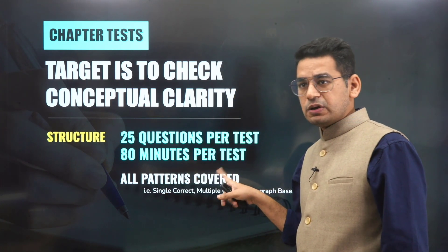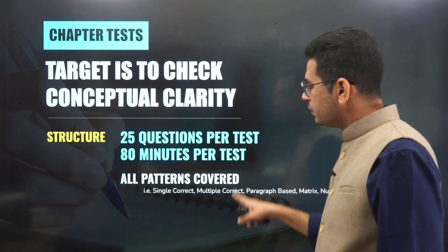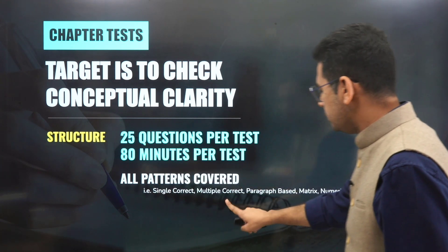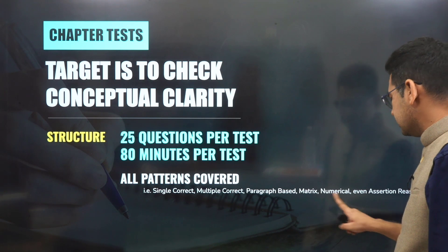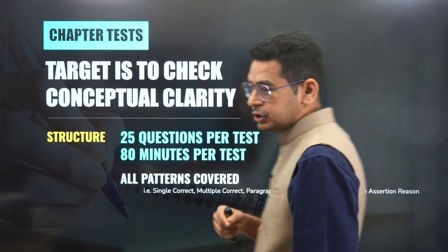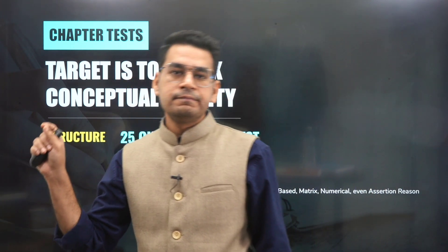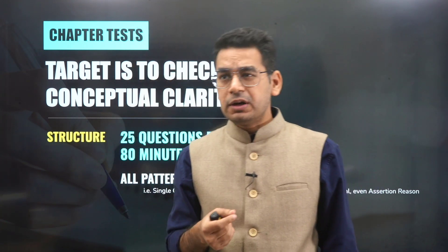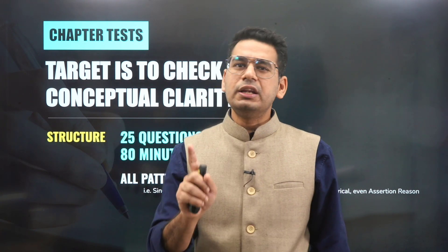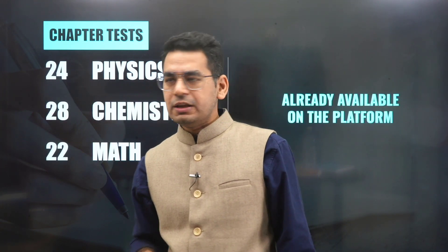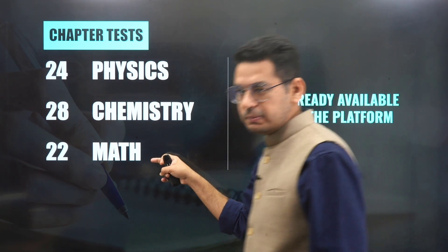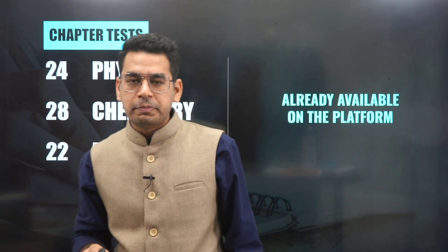Each chapter test is 80 minutes, in JEE Advanced style, and covers all the question patterns. In those 25 questions, you will have single correct, multiple correct, paragraph, matrix, numerical, and even assertion-reason. So we will test you on everything. This gives you good clarity, and the chapter test is basically meant for time drills. Once uploaded, you can take it anytime. There will be 24 Physics chapter tests, 28 Chemistry tests, and 22 Math papers, already available on the platform as soon as you purchase.